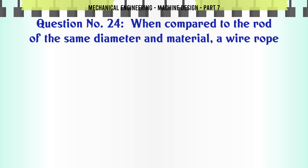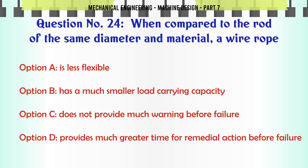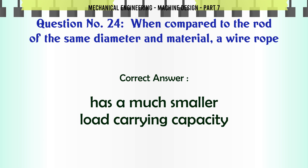When compared to a rod of the same diameter and material, a wire rope: a) is less flexible, b) has a much smaller load carrying capacity, c) does not provide much warning before failure, d) provides much greater time for remedial action before failure. The correct answer is: has a much smaller load carrying capacity.